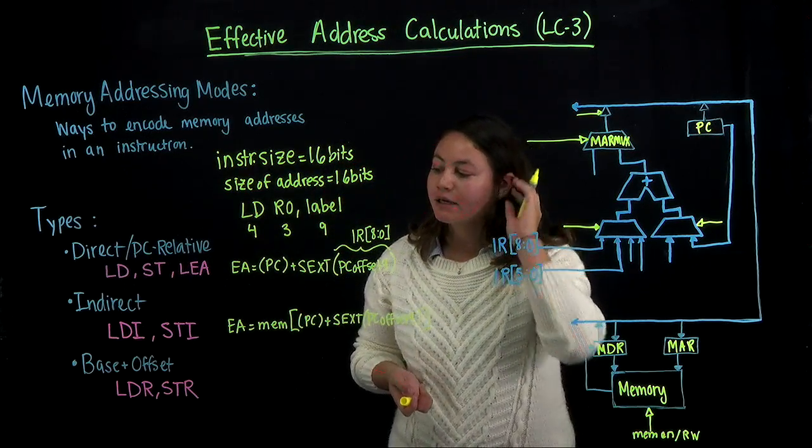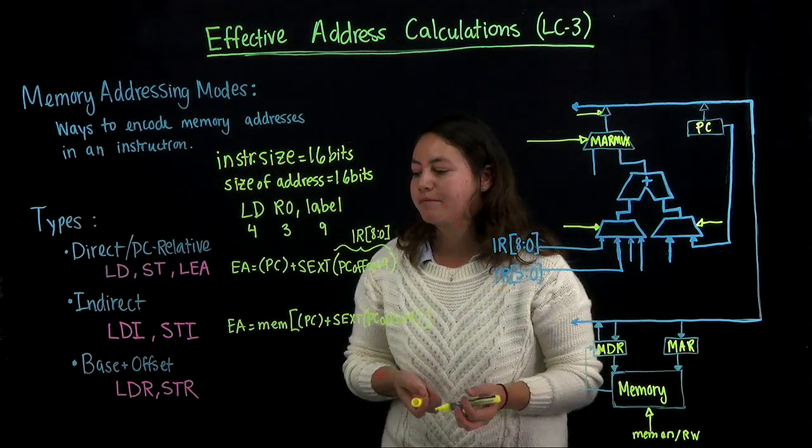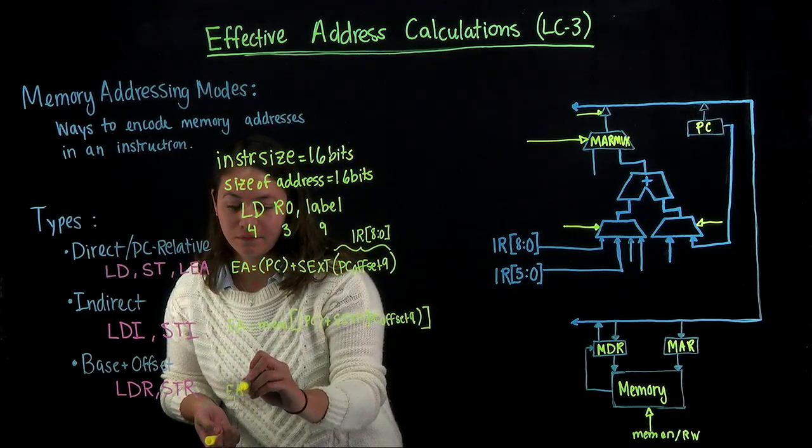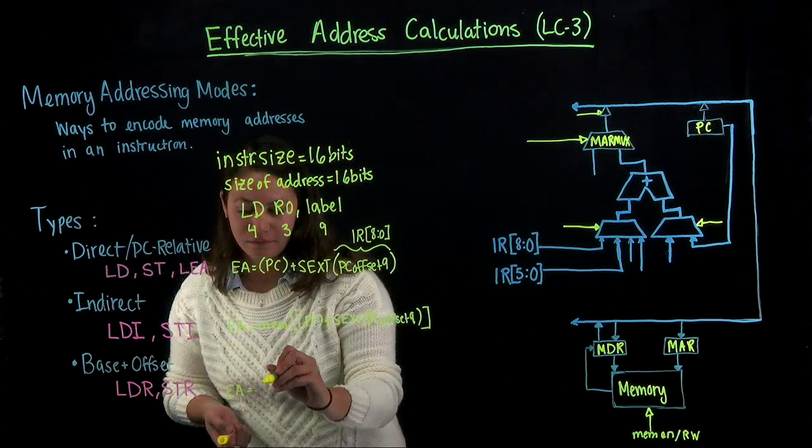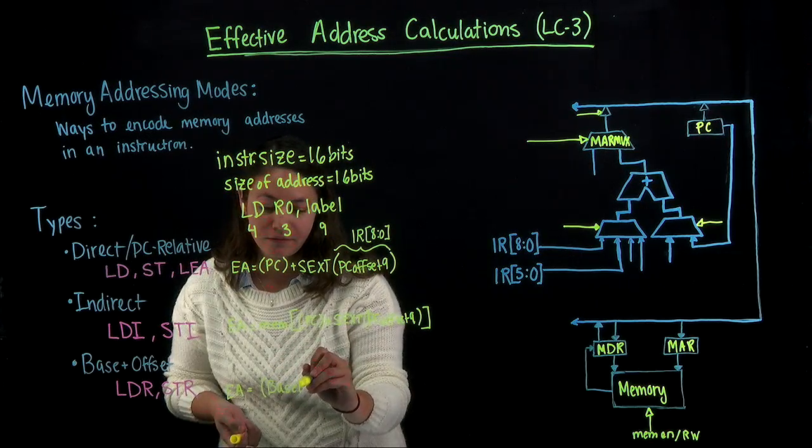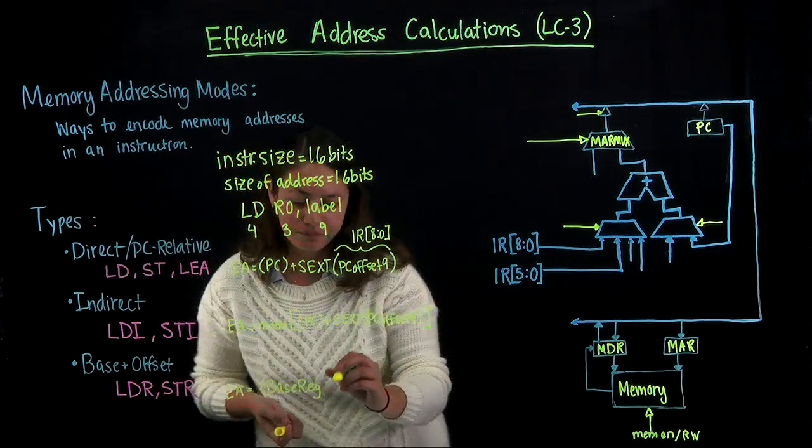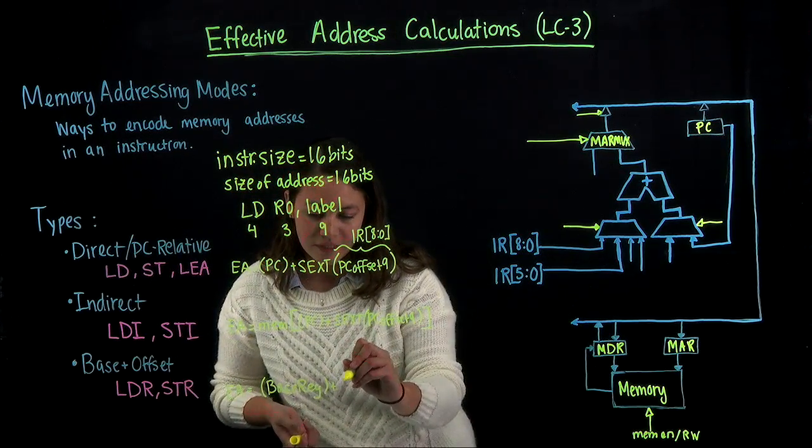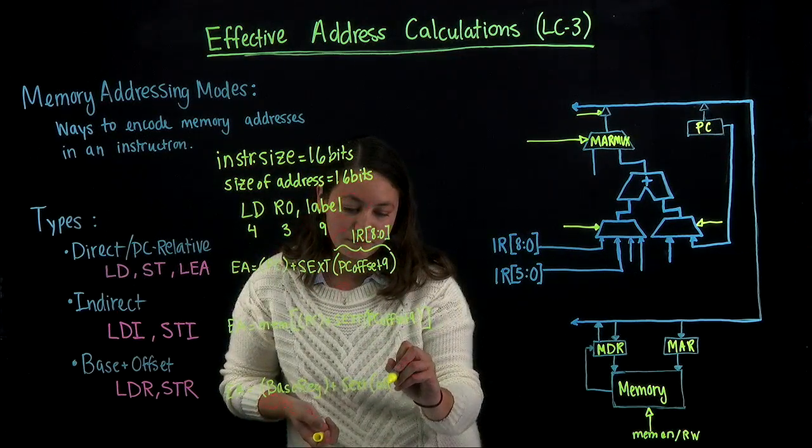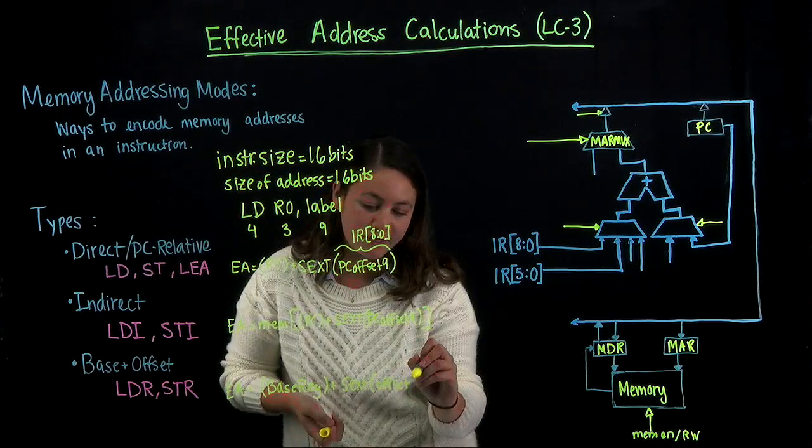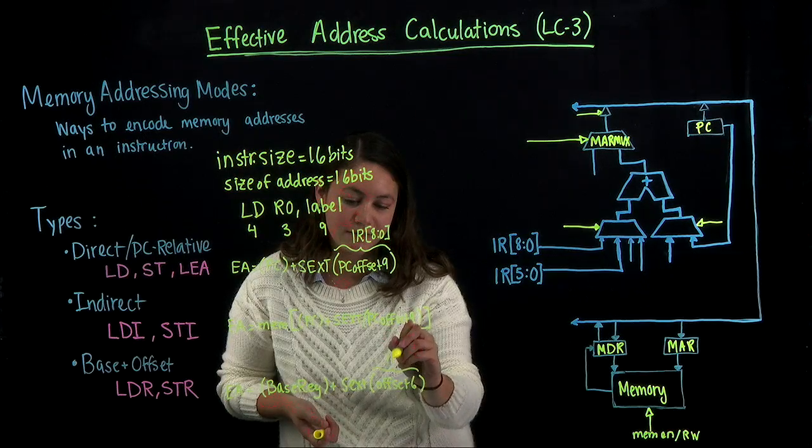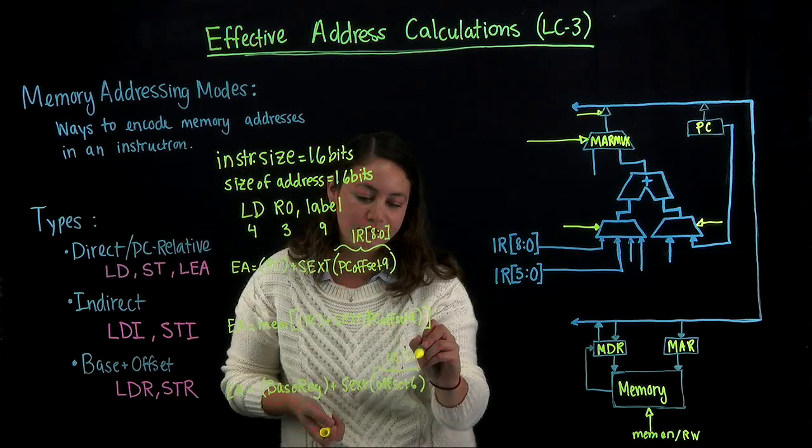And lastly, the effective address for the base plus offset addressing mode is going to be the contents of the base register plus the sign extended offset 6, which you might also see as the instruction register bits 5 through 0.